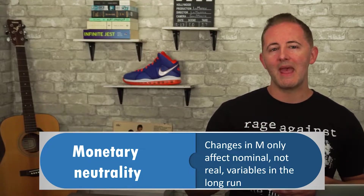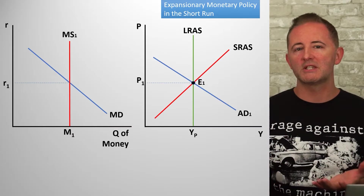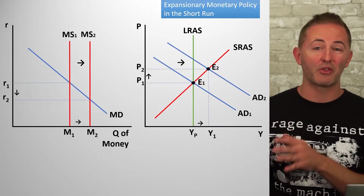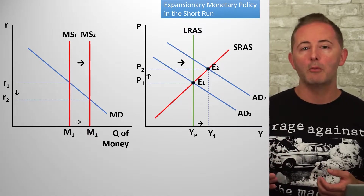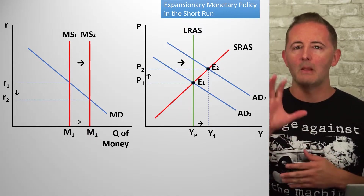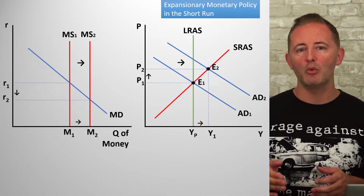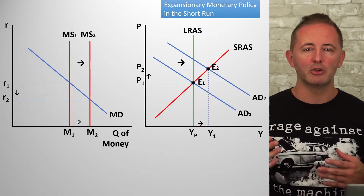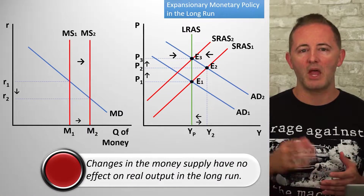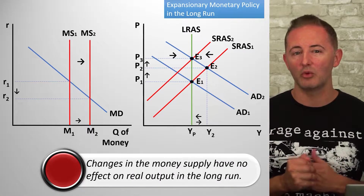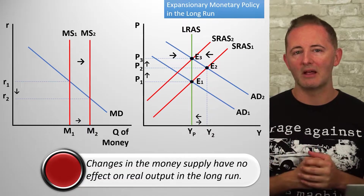We can see this on the AD-AS model with an economy at full employment. Suppose expansionary policy is used — AD shifts to the right. In the short run, we see higher output and lower unemployment. In the long run, nominal wages and inflationary expectations increase, shifting the SRAS to the left. When we compare E1 and E3, the only change is a higher price level — no longer any effect on output and unemployment.